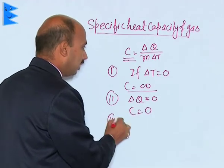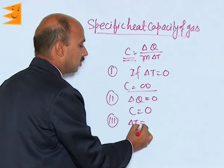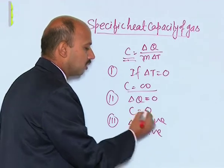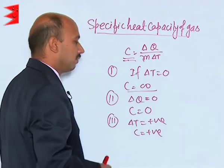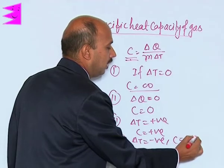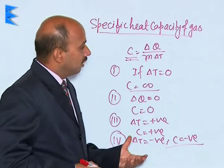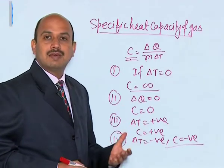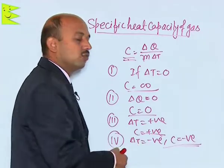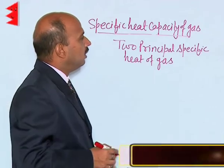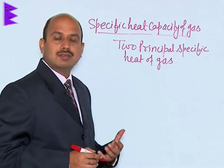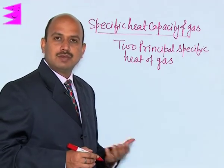The third case: if delta T is positive, then specific heat C is positive, and if delta T is negative, then C is negative. So in this case, the specific heat of gas can have any value — it can have 0, it can have infinite, it can have positive, and it can also have a negative value. So we have seen that the specific heat of gas can take all values: 0, positive, negative, and infinite.